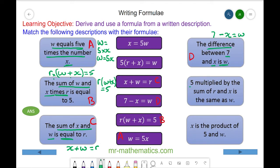5 multiplied by the sum of r and x, so r and x is r add x, and it is 5 multiplied by that. We can put that in brackets, and that is equal to w. We'll call this one E, and this one will match.